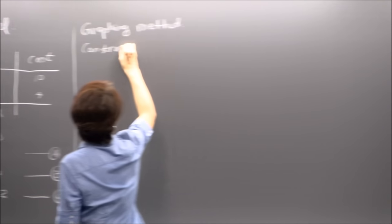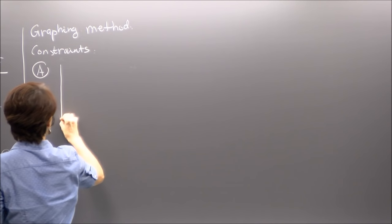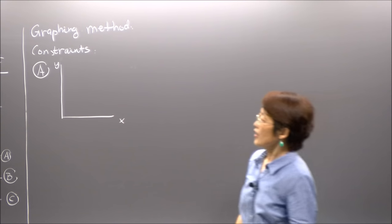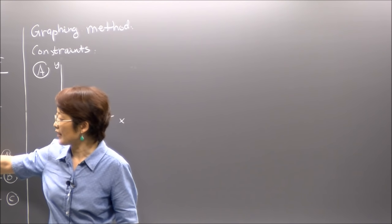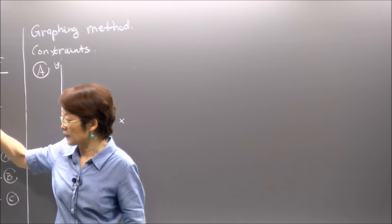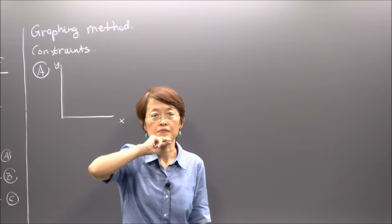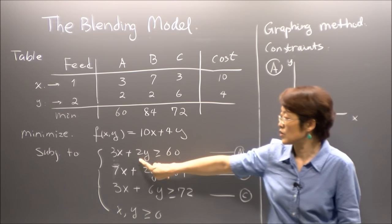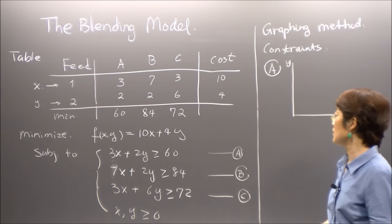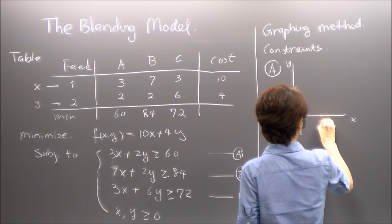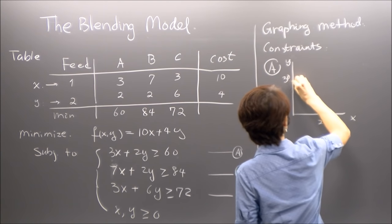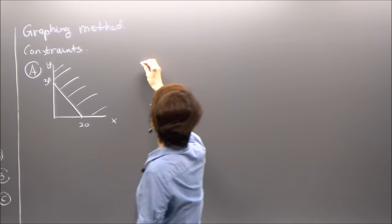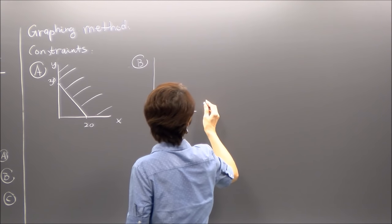For constraint A, I draw x and y in the first quadrant. You find the boundary line where you have the equal sign, and the region above is what you want. The x-intercept is 60/3 and the y-intercept is 60/2. So you have 20 on the x-axis and 30 on the y-axis. Draw a straight line and the region above satisfies constraint A.